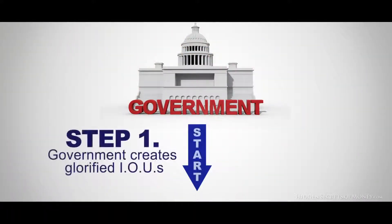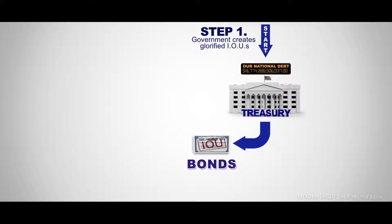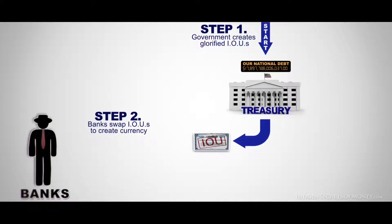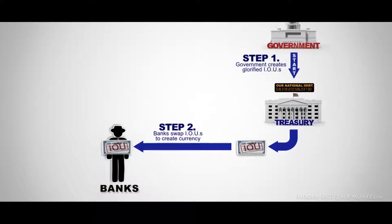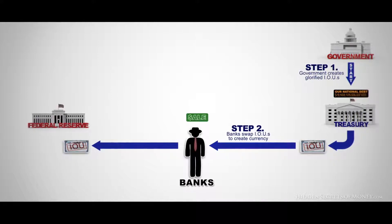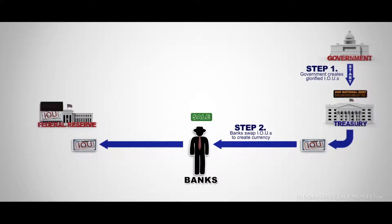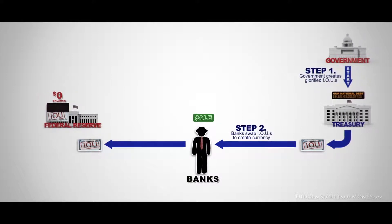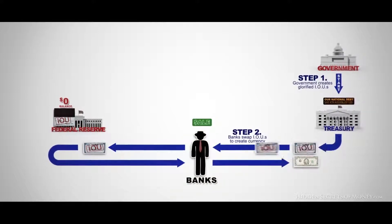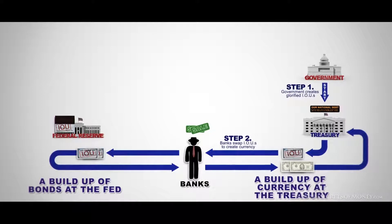So let's do a recap and break it down. The way the system works is: Step 1 — the government creates glorified IOUs. These bonds increase our national debt and put the public on the hook to pay it back. Step 2 — IOUs are swapped to create currency. The Treasury sells the bonds to the banks. The banks then turn around and sell our national debt, at a profit, to the Federal Reserve — which they probably own. The Federal Reserve then opens its checkbook that doesn't have a penny in it and buys those IOUs with IOUs that it writes — checks — on a checking account with a zero balance. Then they give those checks to the banks and currency springs into existence. This results in a buildup of bonds at the Federal Reserve and currency at the Treasury, which is really just a supply of numbers.